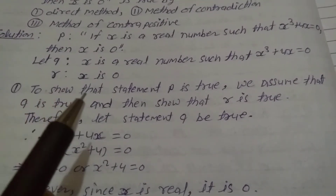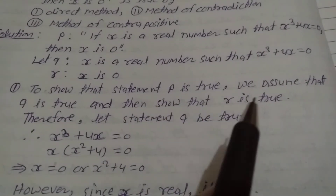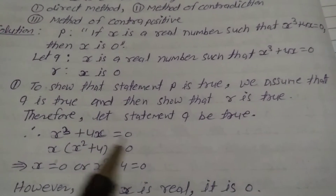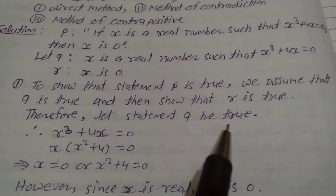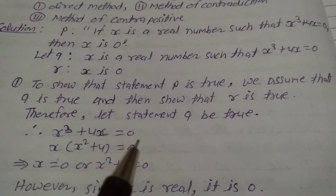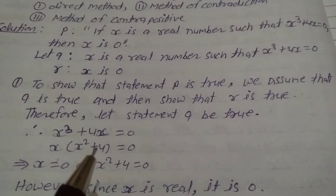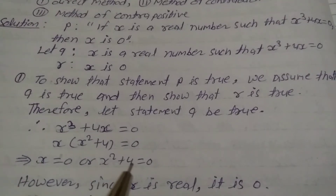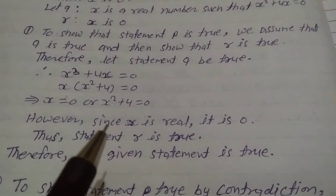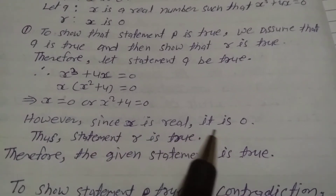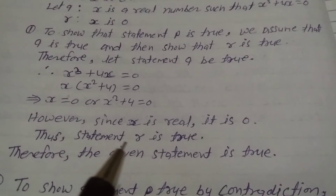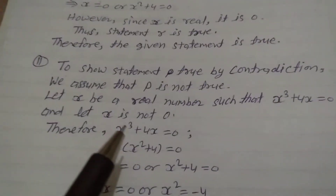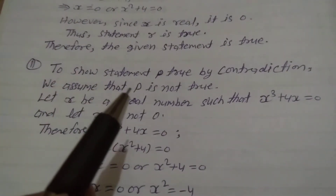First method — Direct method: To show that statement p is true, we assume that q is true and then show that r is true. Therefore, let statement q be true: x³ + 4x = 0. Taking x common: x(x² + 4) = 0, which implies x = 0 or x² + 4 = 0. Since x is real, x = 0. Thus statement r is true, and therefore the given statement is true.